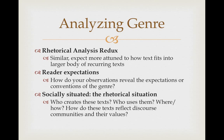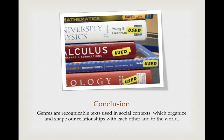The last point I want to drive home about how we analyze a genre is that we also think about how they're situated in rhetorical situations. The rhetorical situation is an idea we'll talk about this semester — briefly, it has to do with the whole context of a text, what's going on around it: who creates it, who uses it, where and how it's used. That is all part of the rhetorical situation of a text — the background information about the text. That's useful for helping us think about what communities use genres and what those texts say about who those communities are and what their values are. So again: genres are recognizable texts used in social contexts which organize and shape our relationships with each other and to the world.